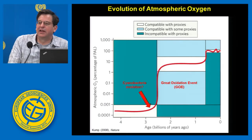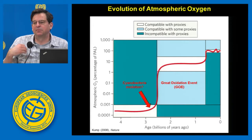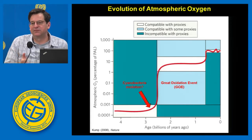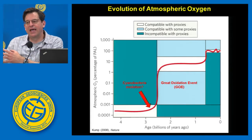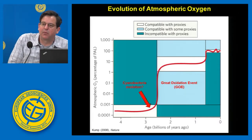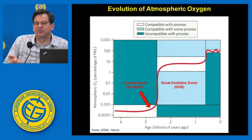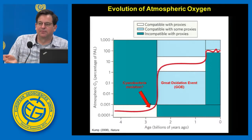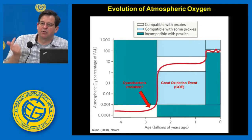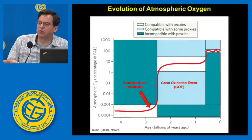Another benchmark was 2.7 billion years ago, based on organic biomarkers — compounds specific to certain organisms. In 1999 it was found that specific biomarkers resembling cyanobacteria appeared at 2.7 billion years. We have since realized those biomarkers are probably contamination, so that evidence is gone. The microfossil evidence isn't conclusive, the biomarker evidence isn't conclusive. So we've turned to looking at geochemical proxies in the rocks.